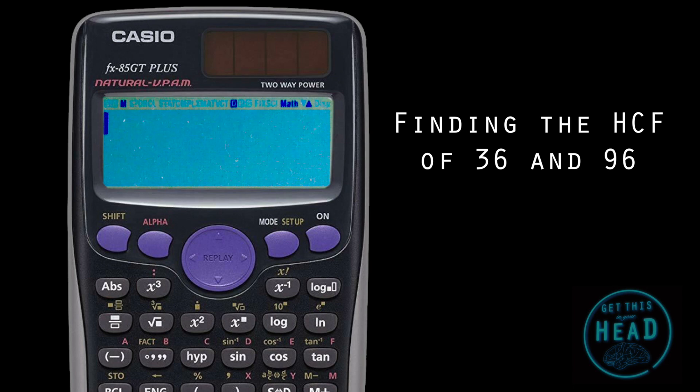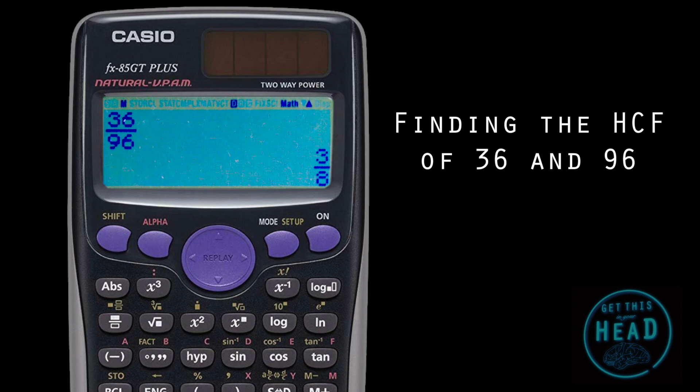We can do that by rearranging the equation. To show how this works, let's find the highest common factor of 36 and 96. I type in 36, press the fraction button, put 96 as the denominator, and press equals — it gives me 3 over 8.